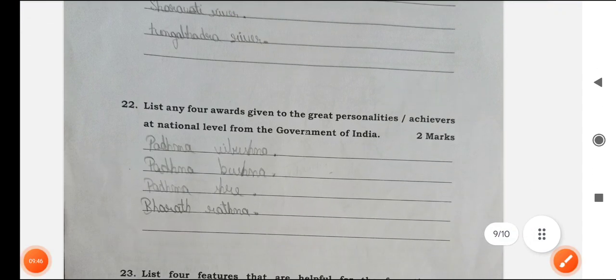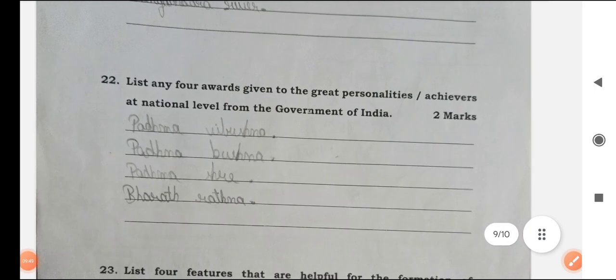List any four awards given to the great personalities achievers at national level from the government of India. Padma Vibhushan, Padma Bhushan, Padma Shri, Bharat Ratna.